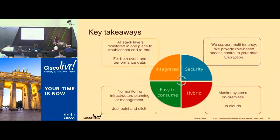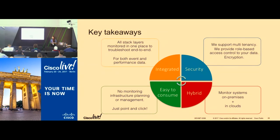After this introduction, I want you all to know there are four major benefits of Cisco Zeus. First, it is integrated — you can monitor all stack layers seamlessly within the software. It is optimized for both event data and performance data, logs and metrics, which other solutions in the market may not be able to do. It is also secured because it's encrypted by default and we support multi-tenancy role-based access control. It is hybrid — you can choose to work on cloud or host by yourself. And it's easy to consume — you only need to point and click, just like what I showed you in the UI.